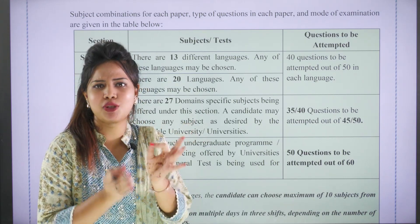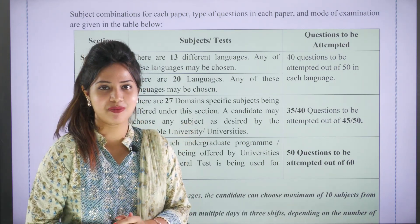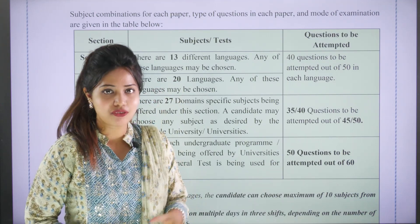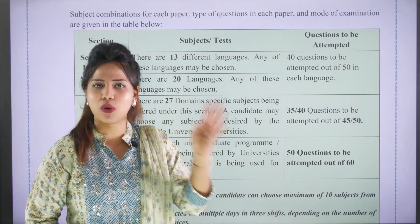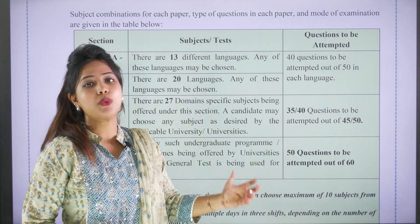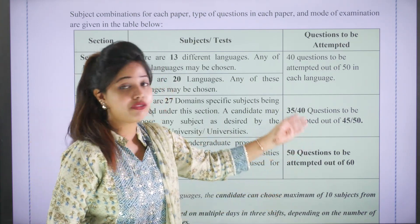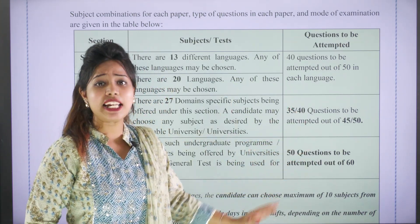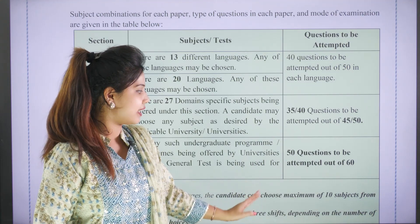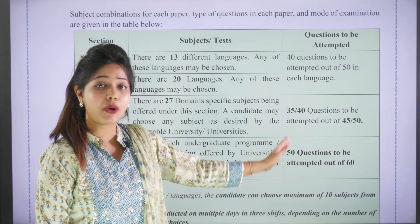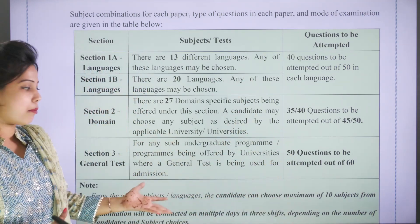Regarding the number of questions: in Section 1, you attempt 40 questions out of 50. In Section 2, you attempt 45 questions out of 50. In the General Test, you attempt 15 questions out of 60.